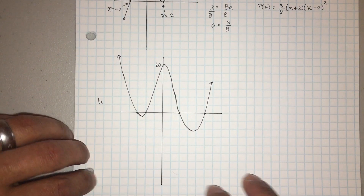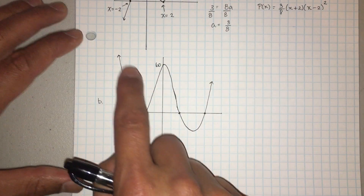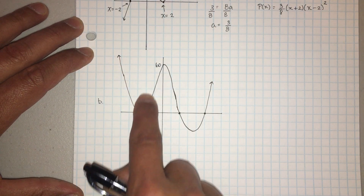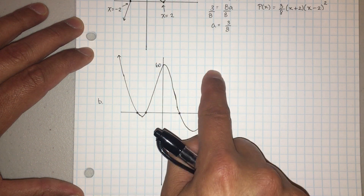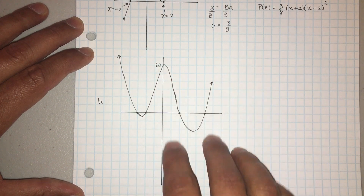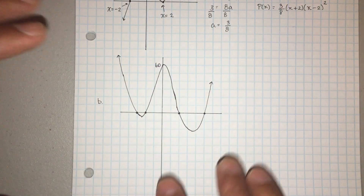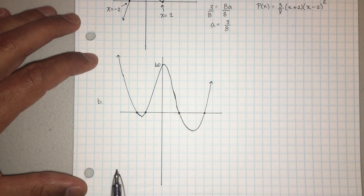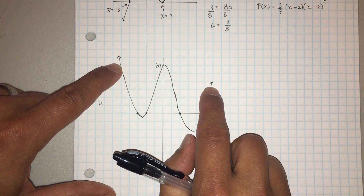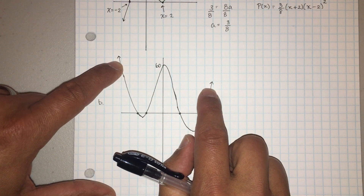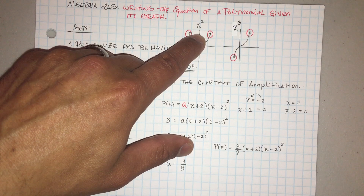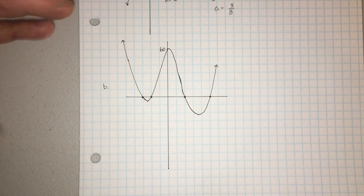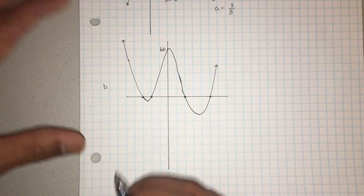All right guys, let's go ahead and do another one. Notice the curves or the turns: one, two, three, four — so this is four. A W-shape always has a degree of four. The end behaviors are both going up, so I know it's even. Since it's a W and I counted the turns, it's four, so it's gonna be something to the fourth power. We'll do P of x.